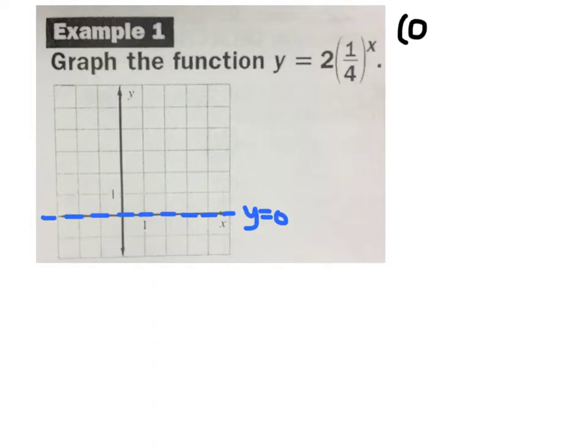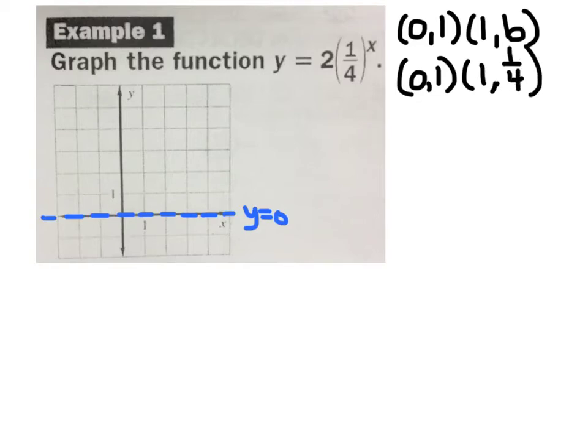So I always start by plotting the points 0, 1, 1, b. So, what's the base of the exponent? 1 4th, because 1 4th is being raised to the x. Now we have to deal with this 2 out in front. This 2 is our a. So, is it going to stretch or compress the function? It's going to stretch because 2 is bigger than 1. So, how do I deal with this 2? The a multiplies the y values. So, we take our y values. 1 times 2 is 2. And 2 times a 4th is a half.